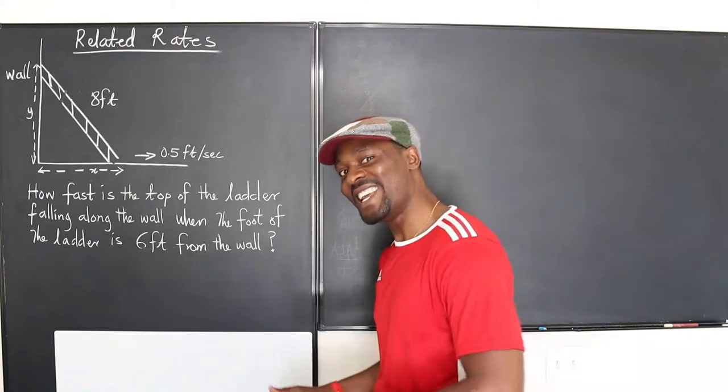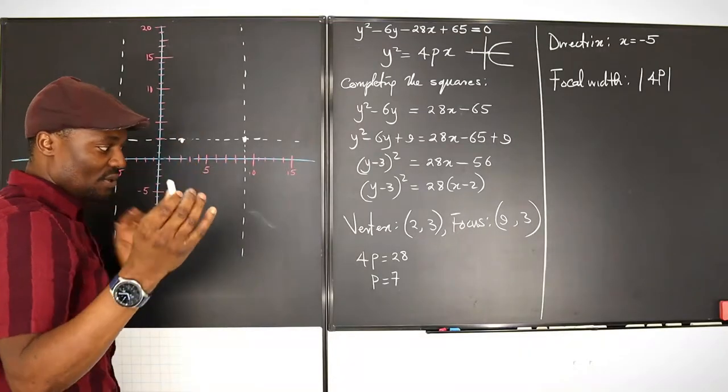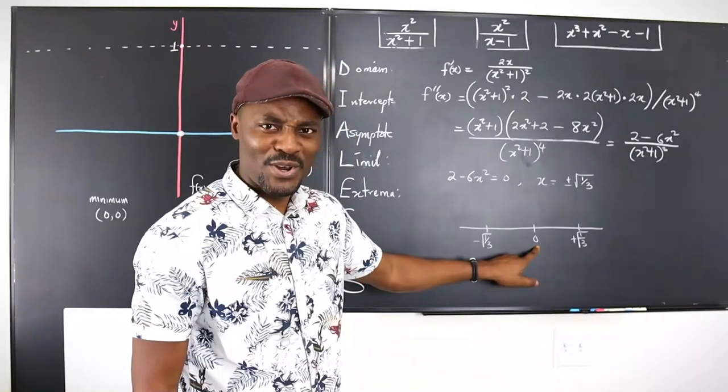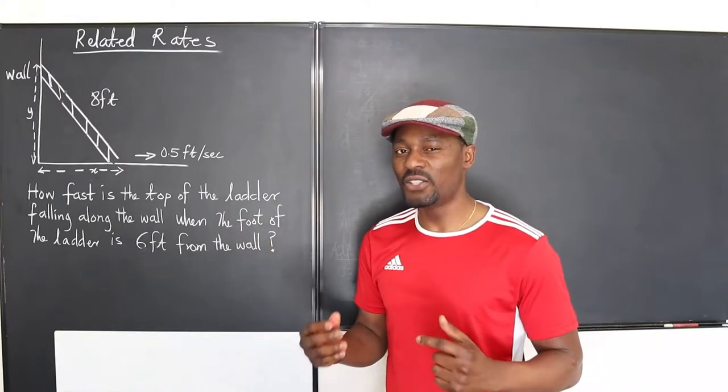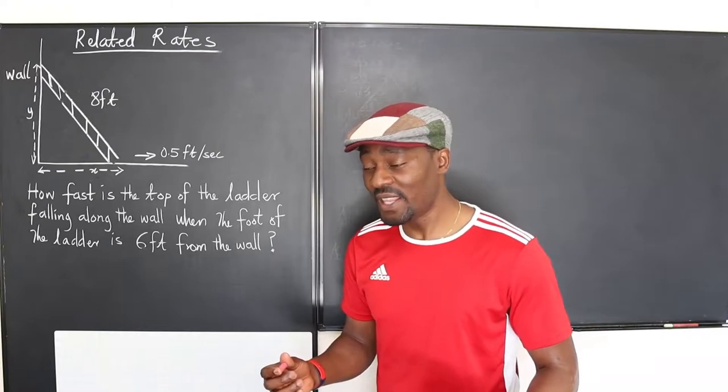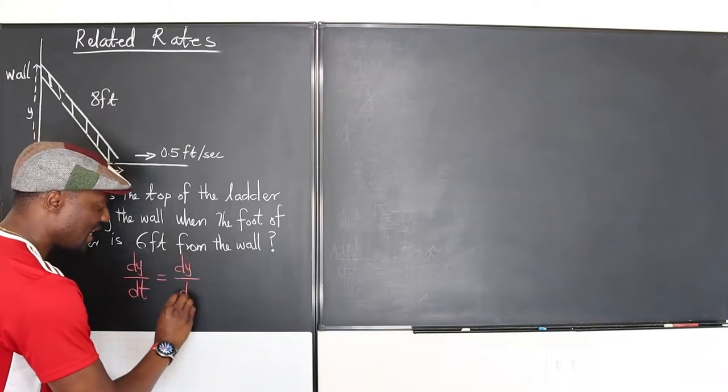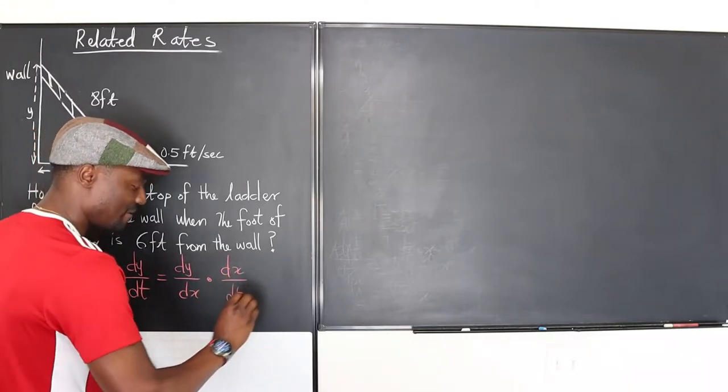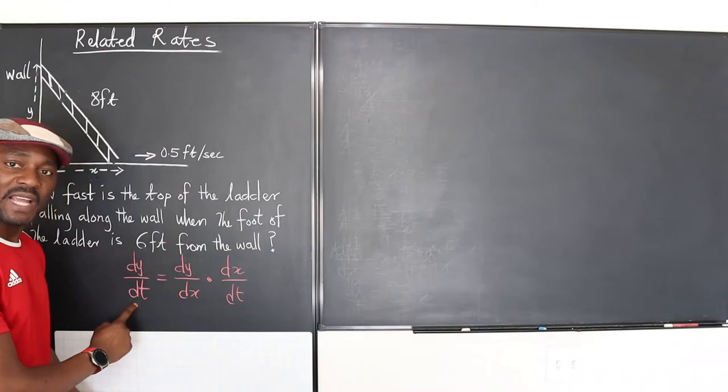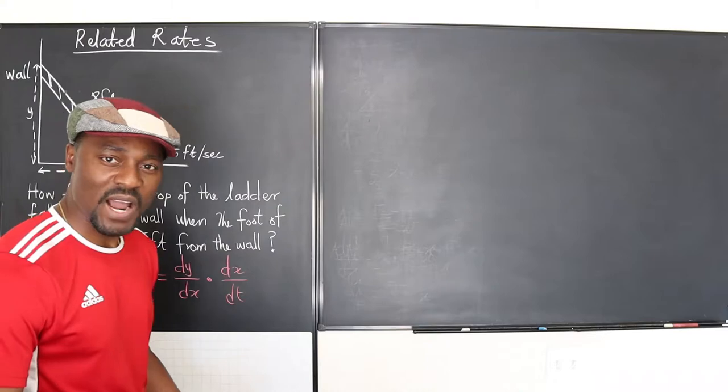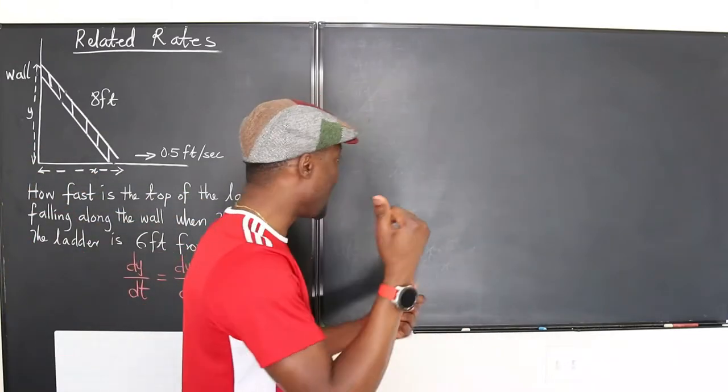Now that we know what the mission is, what's the connection? Remember that related rates are just an application of the chain rule. The chain rule says that if you want to find dy/dt, all you need is dy/dx, then you multiply it by dx/dt. Right now, this question already gave us dx/dt, the rate of change of x with time, which is 0.5. We're looking for dy/dt, so what we don't know is dy/dx. How do we get dy/dx? Remember Pythagoras's rule.